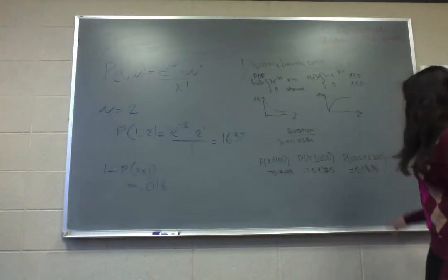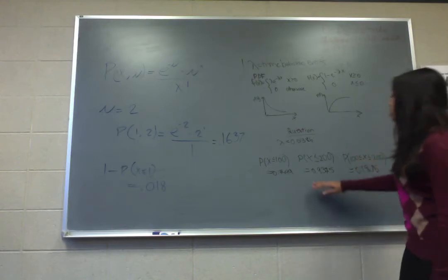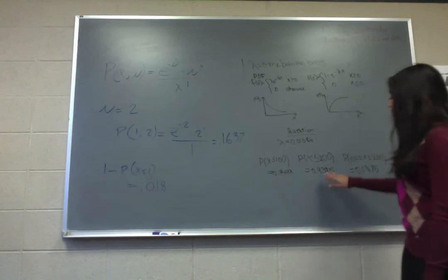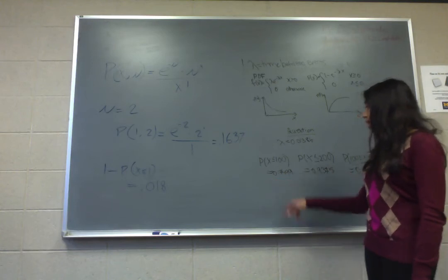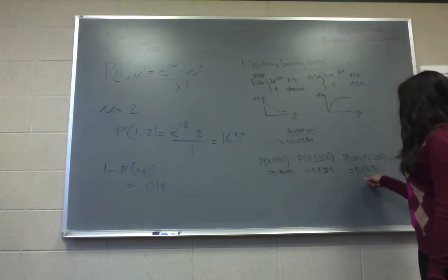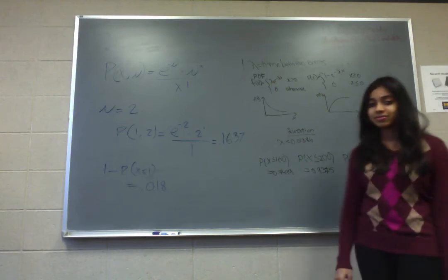Now, if you're trying to find the probability that x is greater than 100 but less than 200, you want to find the probability that it's less than 200 but not less than 100. So you do 0.9375 minus 0.7499. If you do the calculation, you get the probability equals 0.1875. Thank you.